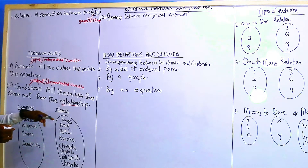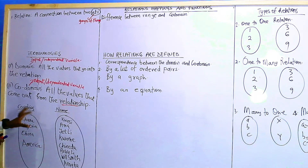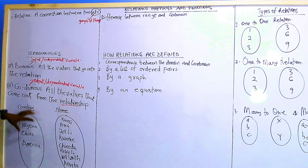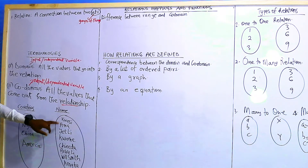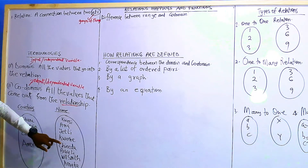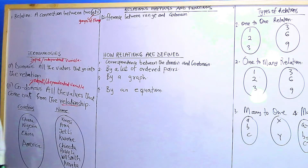Let's look at an example to explain why the co-domain is dependent and the domain is independent. We'll take a relation between countries and some names. In the first set we have some countries: Ghana, Nigeria, China, and America. Then we have some names: Kwesi, Ama, Jet Li, Kwami, Chinedu, Bruce Lee, Rosemith, and Amaka — names associated with various countries.